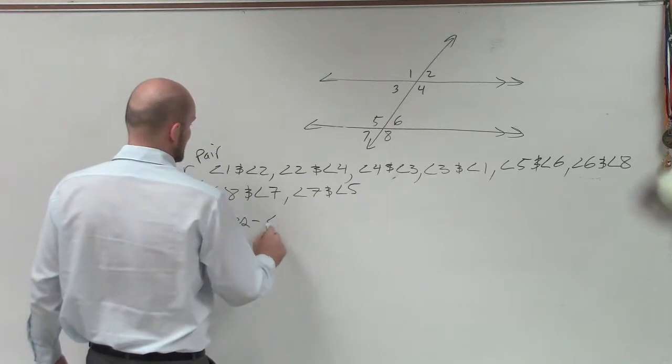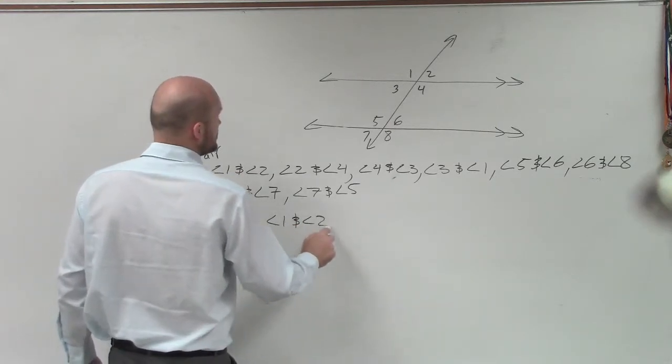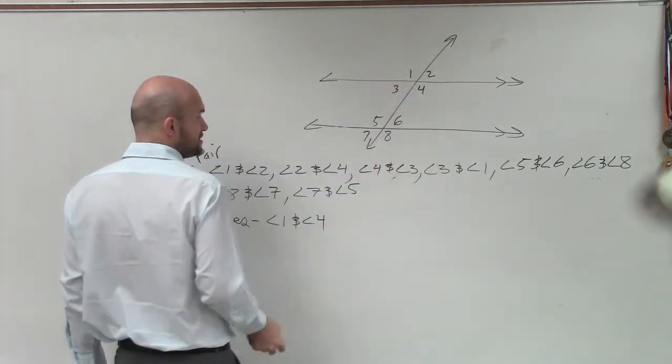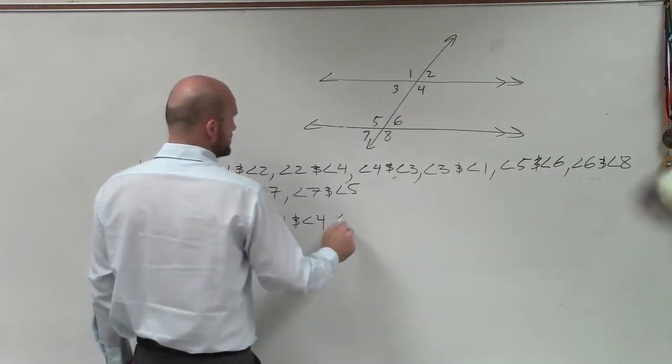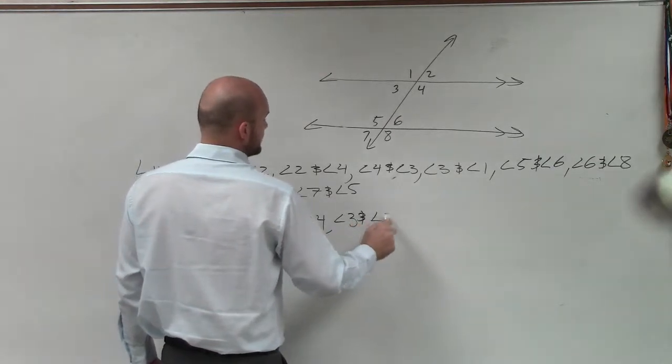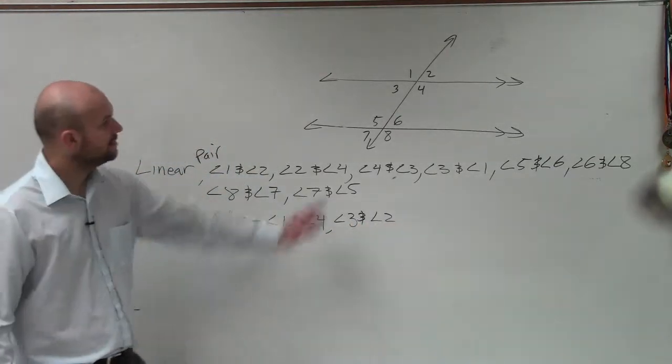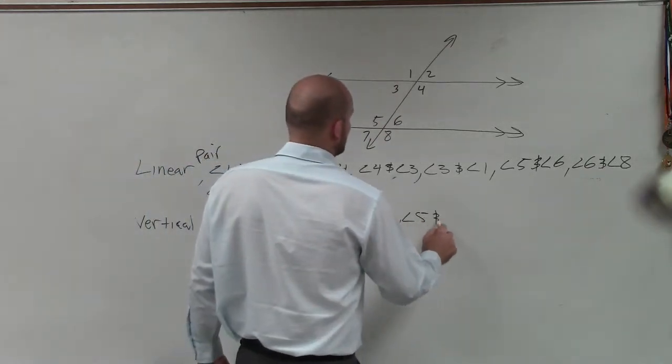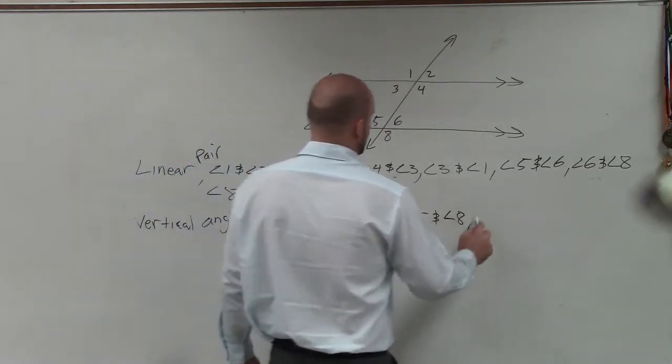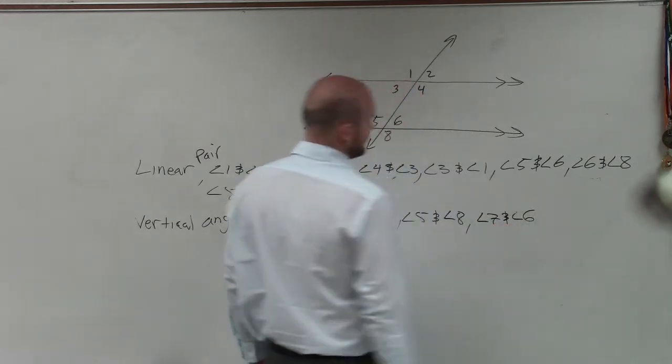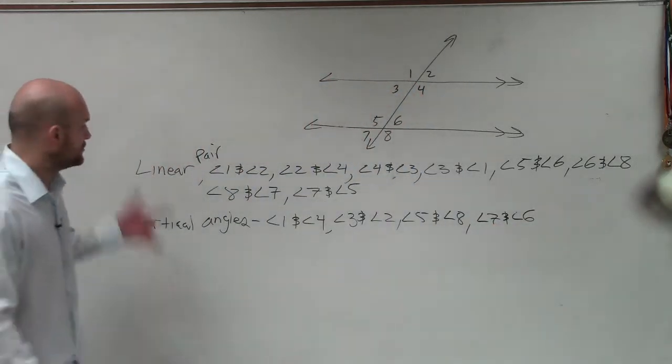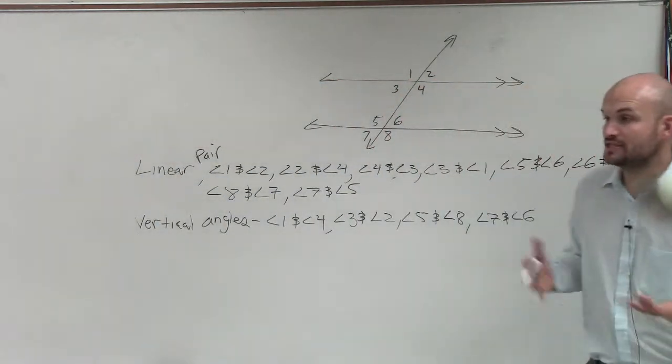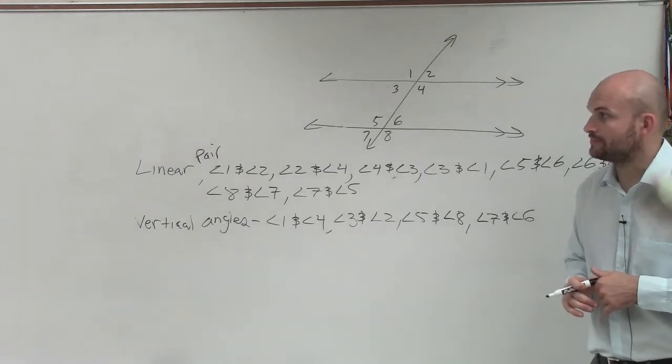So over here, I could say angle one and angle four. Do you guys see how those are directly across from each other, off the intersection of these two lines? And also, you have angle three and angle two. Over here, you can say five and eight and six and seven. Angle five and angle eight. Angle seven and angle six. So those are your two angles that are not going to be dealing with proving parallel lines, but you can still find there's an angle relationship.